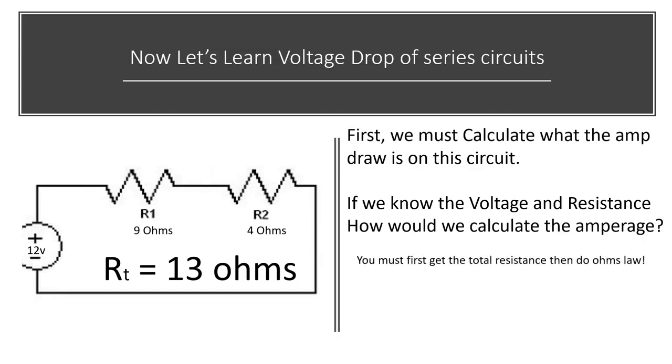First, we must get the total resistance and then apply Ohm's Law. So in this case, it is 9 plus 4. It's going to be 13 ohms.